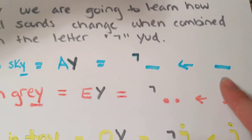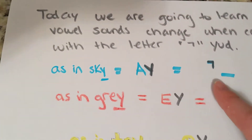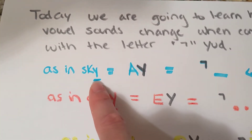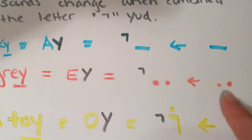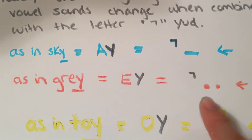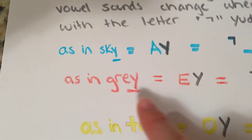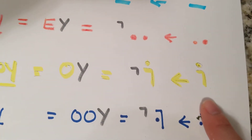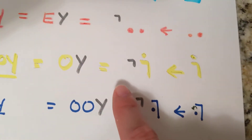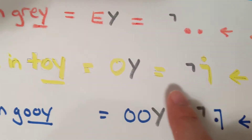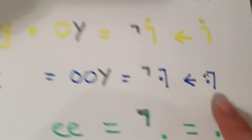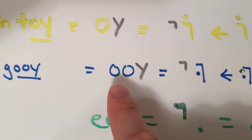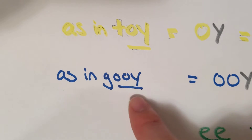First we have ah as in aqua. When combined with a yud, it makes an i sound as in sky. When you take the f vowel and you add a yud, it makes an a sound like as in gray. When you take the o sound as in yellow and you add a yud, it makes an oi sound as in toy. When you take the oo sound as in blue and you add a yud, it makes an ooey sound like gooey.